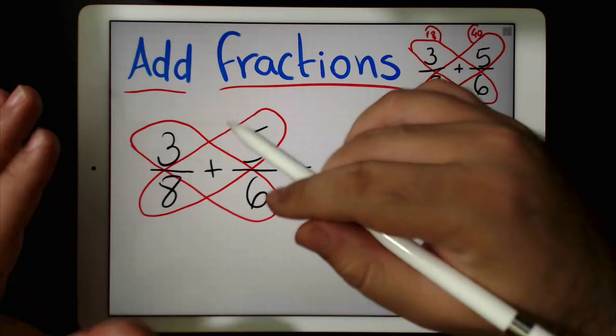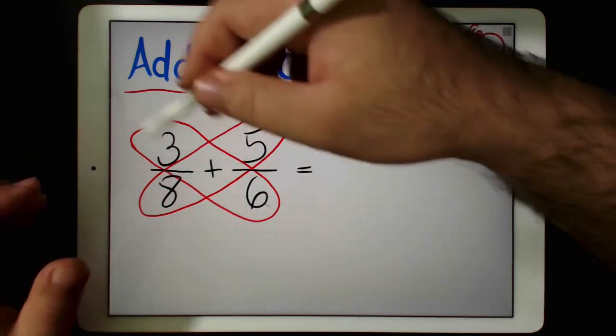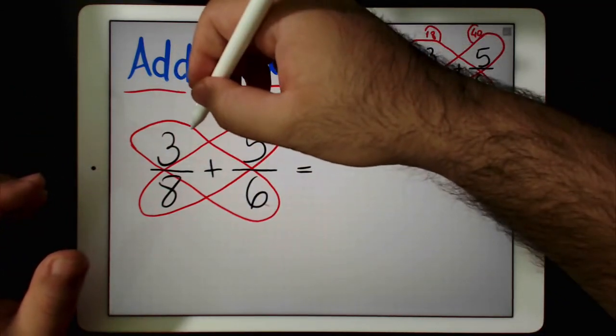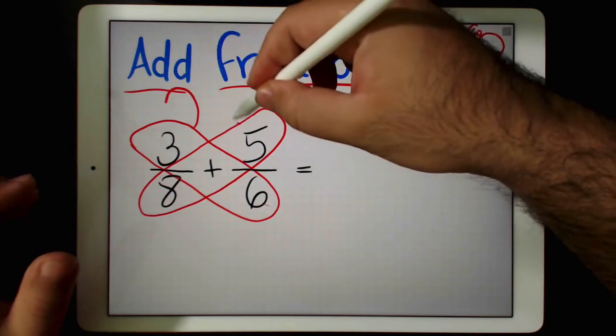Now realize, we will multiply these numbers on the diagonal. So first here and then here.